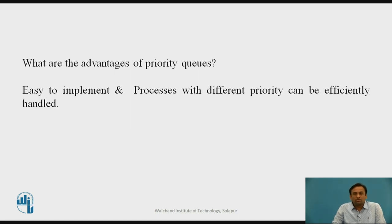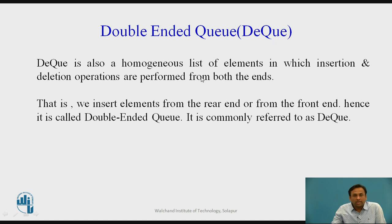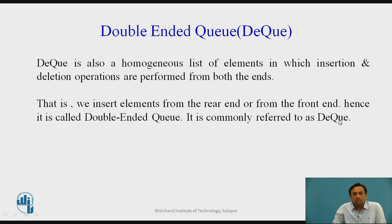Now let us start with the double ended queue, or deque. A deque is a homogeneous list of elements in which insertion and deletion operations are performed from both ends. In a normal linear or circular queue, insertion and deletion can be done from only one end — rear and front respectively. But in a double ended queue, insert and delete operations are performed from both ends, so elements can be inserted from the rear or the front end.